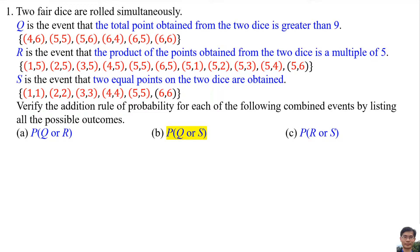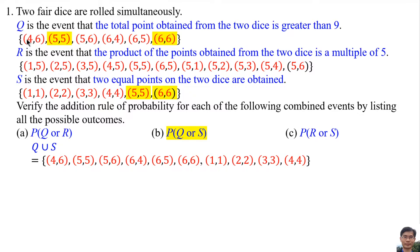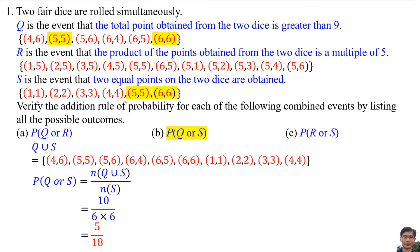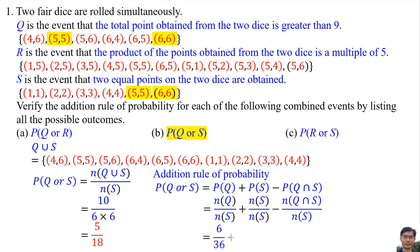For part B, the probability of Q or S: The common elements for Q and S are (5,5) and (6,6). Q or S is Q ∪ S. We copy all elements in Q and all elements in S except the common elements (5,5) and (6,6). The probability of Q or S is 5/18. Using the addition rule, the probability is also 5/18, so the addition rule of probability is verified.